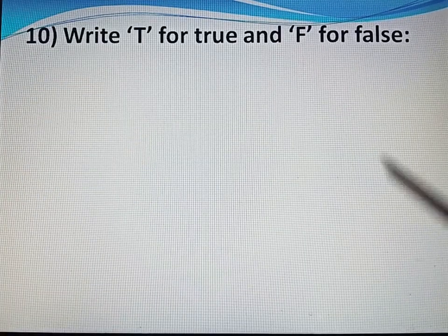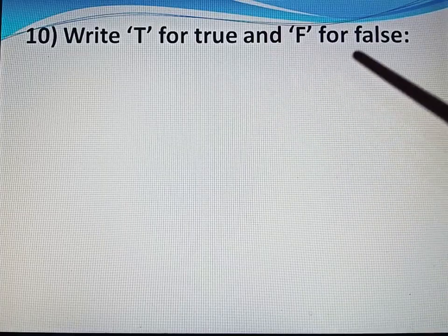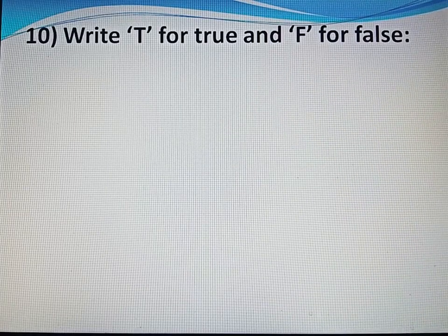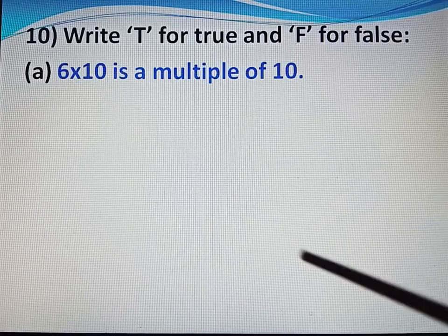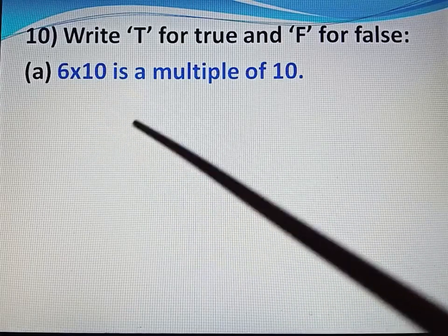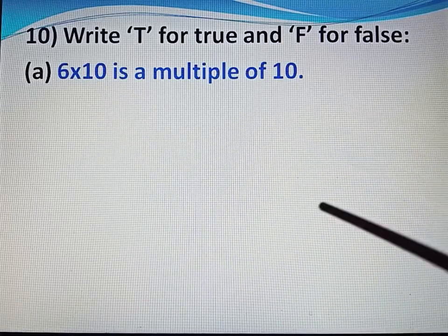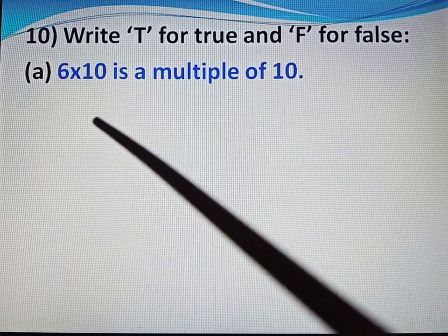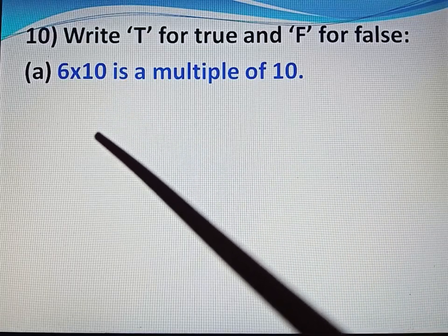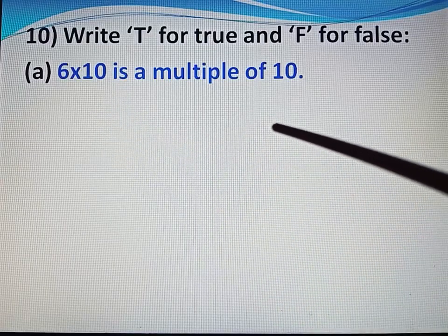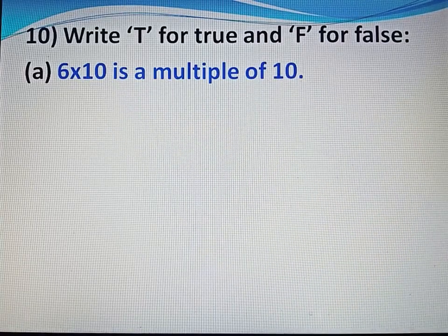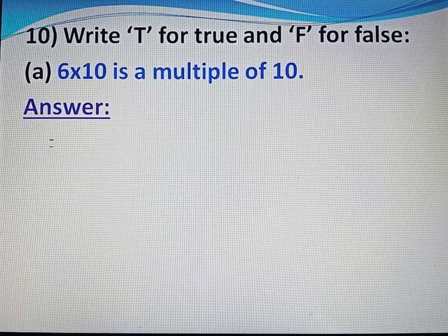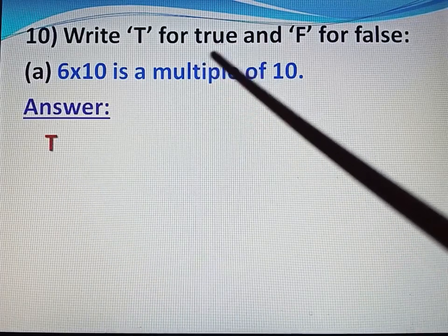Now come to question number 10. Write T for true and F for false. Part A: 6 multiply 10 is a multiple of 10. 6 multiply 10 equals 60, and 60 is a multiple of 10. Yes, this statement is true. Write T.